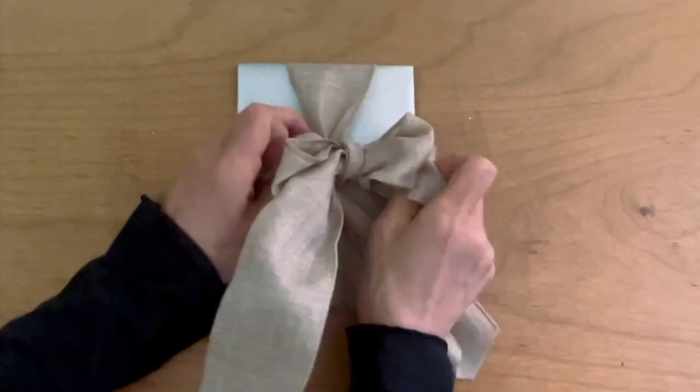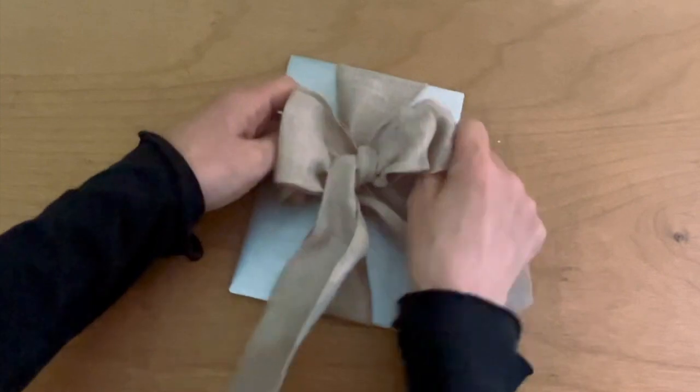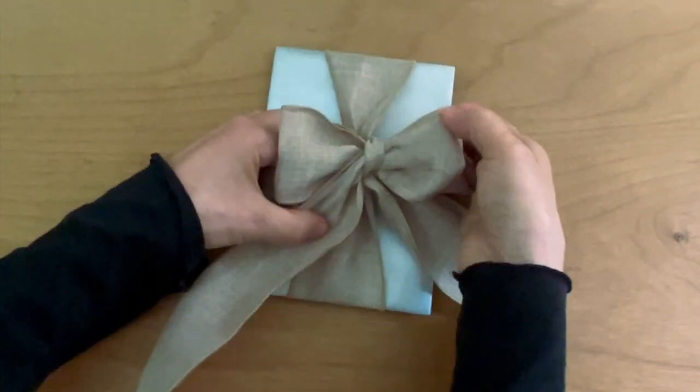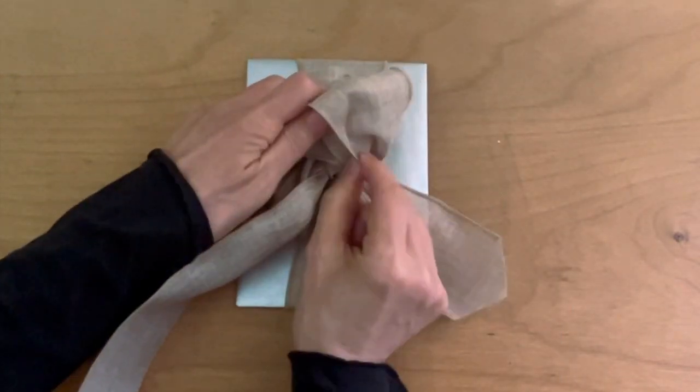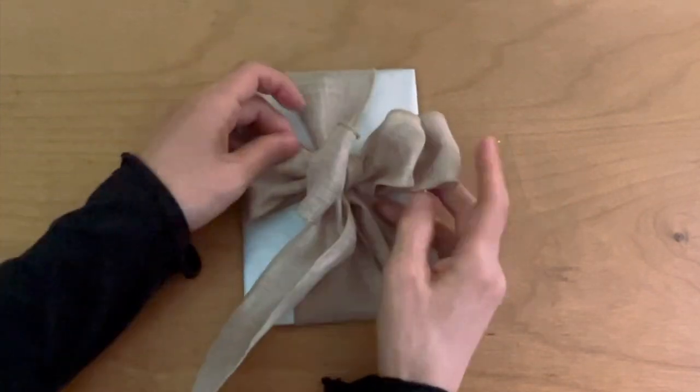Adjust the loops and make a nice ball. Pull the bottom of the bottom right loop and the top of the bottom left loop to tighten.